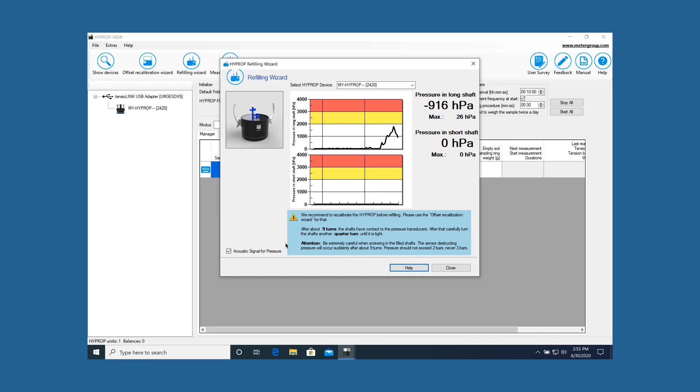Be extremely cautious when you screw in the tensio shafts filled with water. Pressure that can damage the pressure sensor increases abruptly at about nine turns. This pressure should not exceed 2000 hectopascals or 200 kilopascals, and in no case 3000 hectopascals or 300 kilopascals.